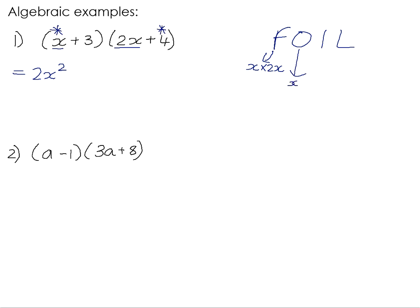So x times 4, and remember that it was x times positive 4, so the product is positive 4x. If we now do the inners, the inners are the two terms that are closest together. Positive 3 times positive 2x is positive 6x. And the last are the two last terms in each bracket. Positive 3 times positive 4 is positive 12.